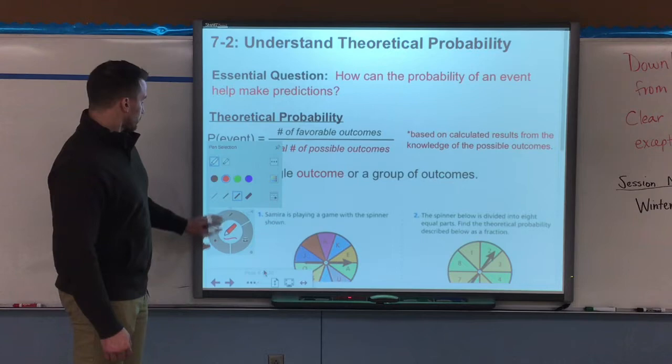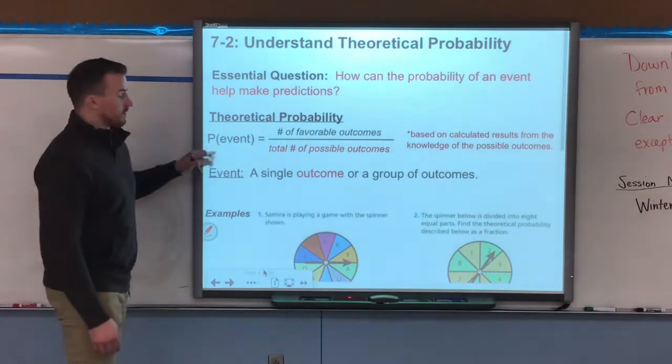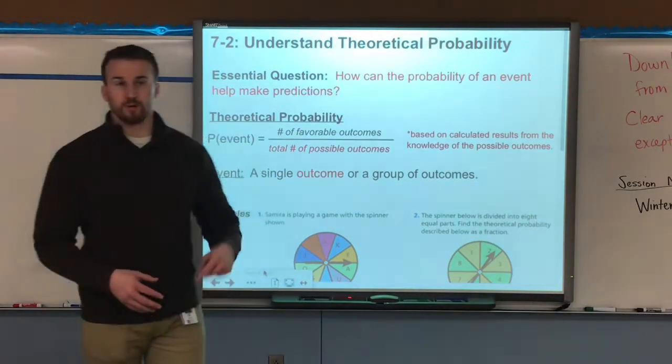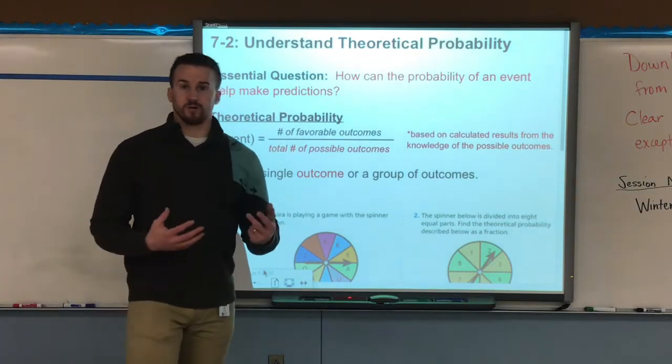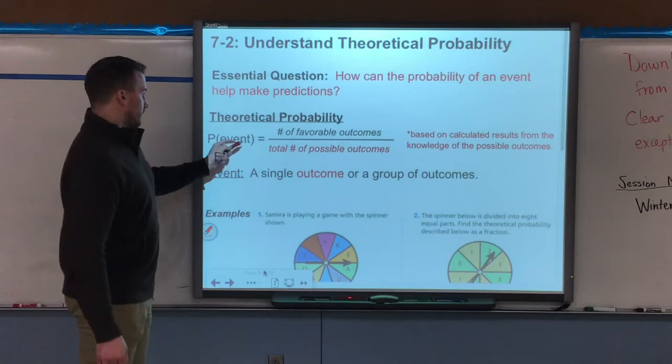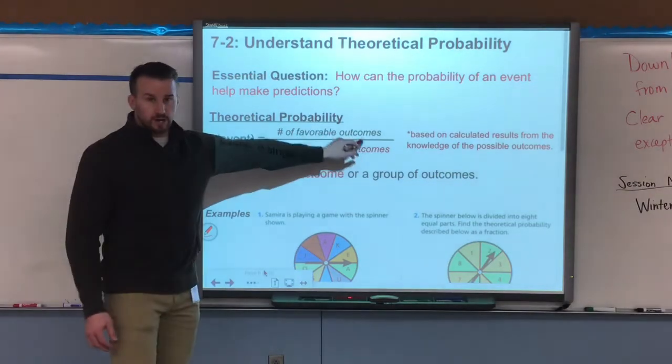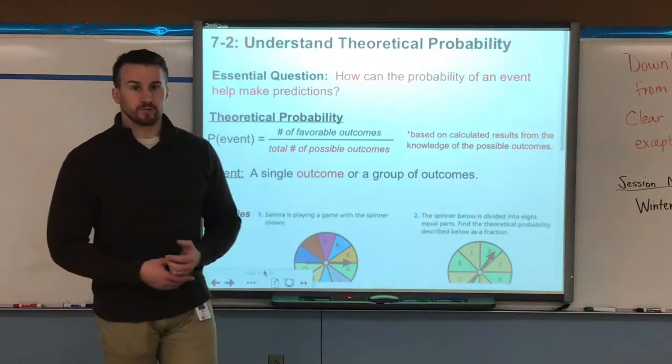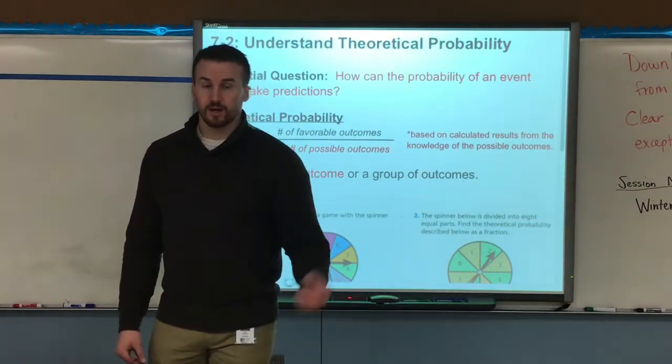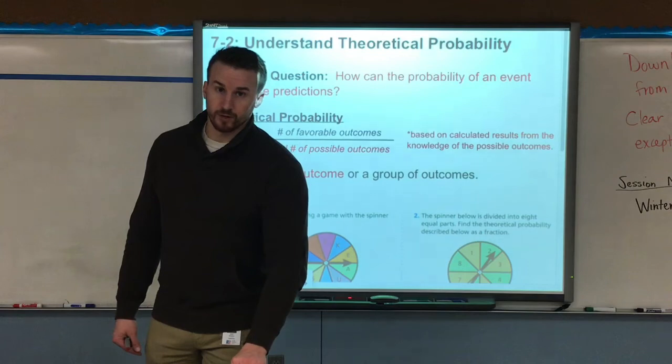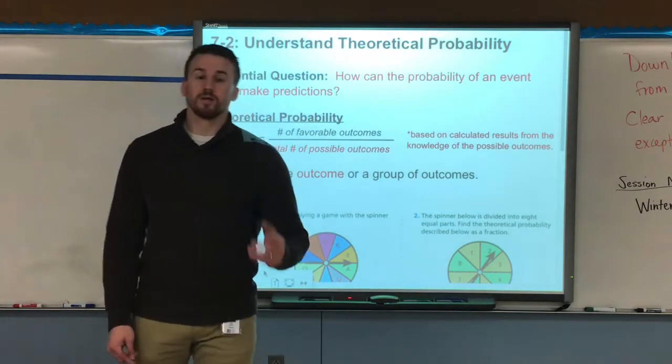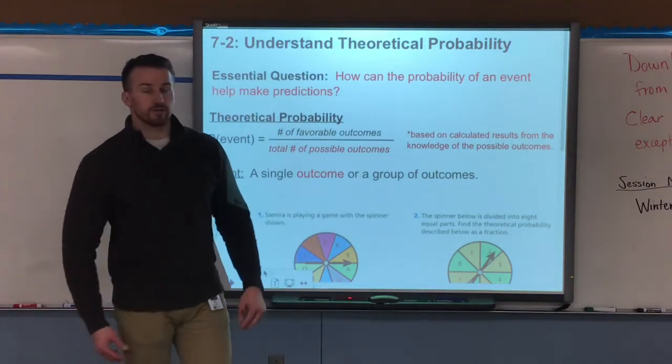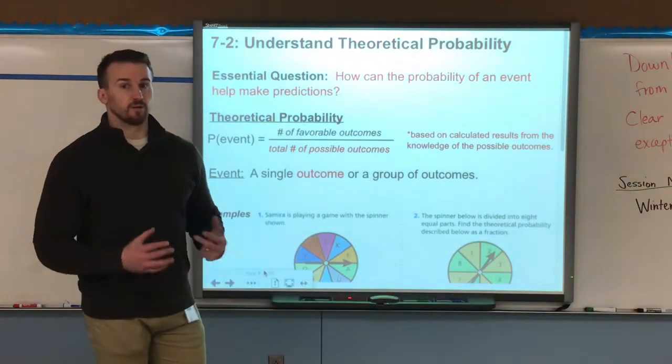So theoretical probability is the probability of an event. So when you see this, P stands for probability. In parentheses is what they want. So if I put P parentheses two and it has a number cube, that means what's the probability of rolling a two, right? So whatever the event is, I write it as a fraction with the number of favorable outcomes, how many I want, over the total number of possible outcomes. So if I would say what's the probability of P being two on a die, that means the probability of a two landing is one side, because one side is two, out of the total sides, which are six. Now this is based on calculated results from the knowledge of the possible outcomes. In theory, what should happen.